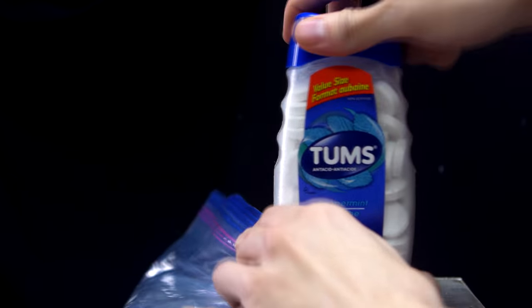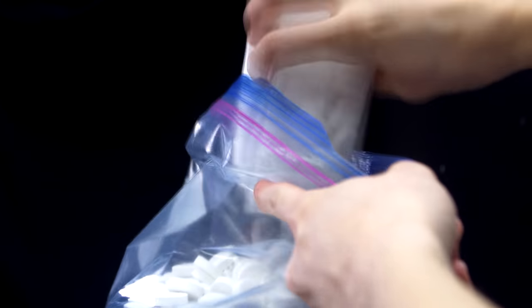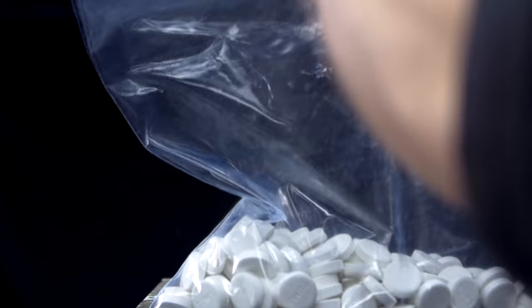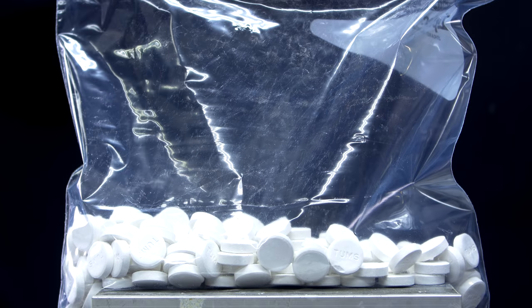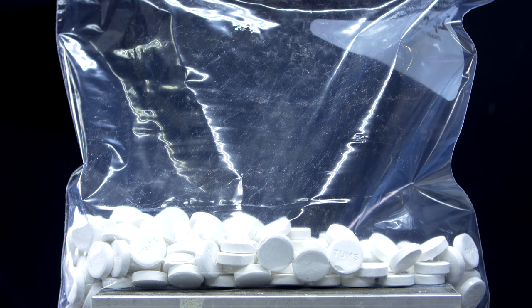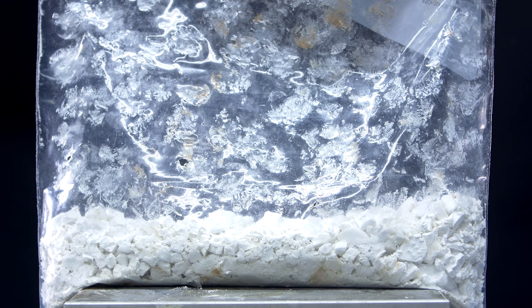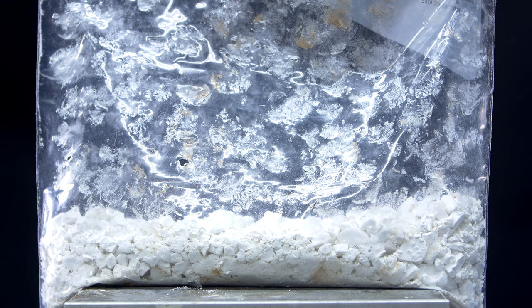The first step is very simple, and we need to bash up and crush all of the tablets. I find the easiest way to do this is to put them into a plastic bag and then smash them with a hammer. This is what the tablets look like when they're intact prior to crushing them, and this is what it looks like after I'm done with them. You'll notice that there's still a lot of large chunks, and that's okay; we really just don't want to have any full intact tablets left.